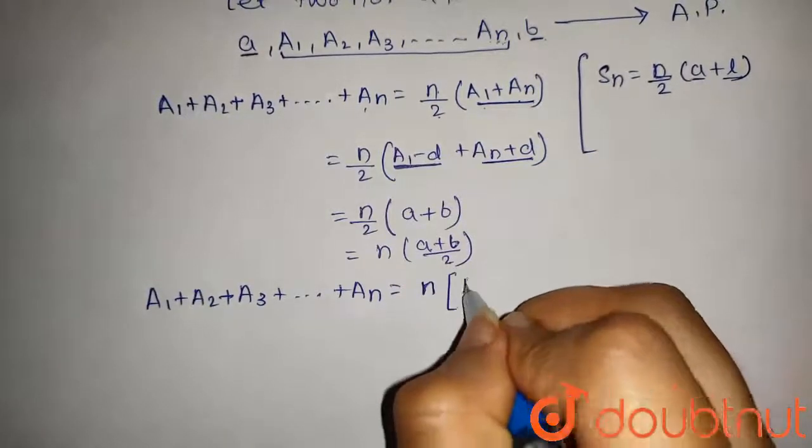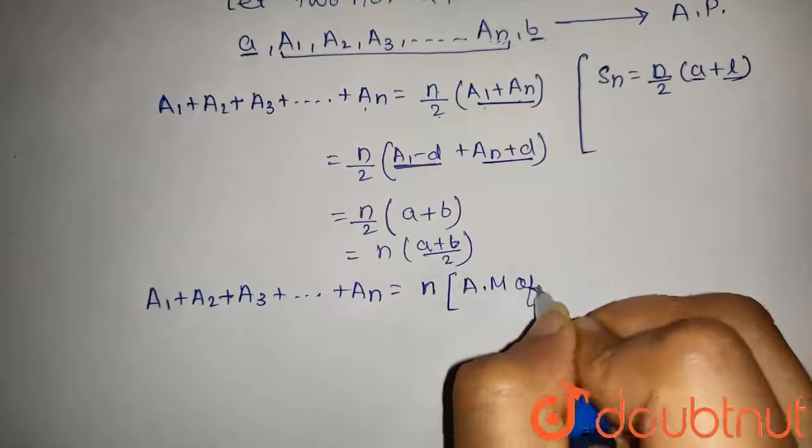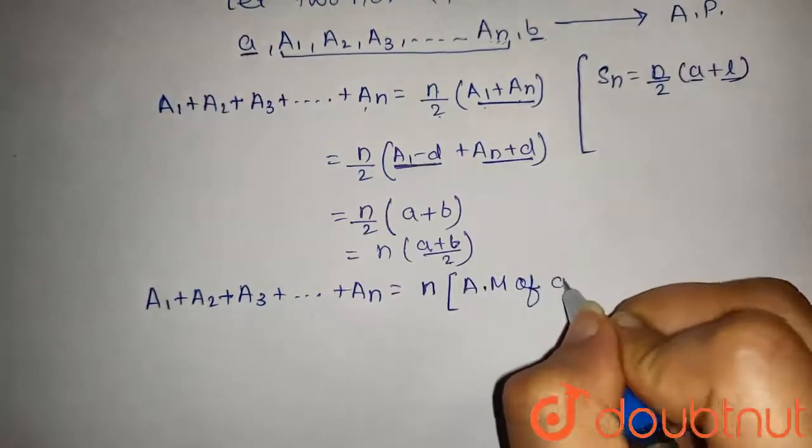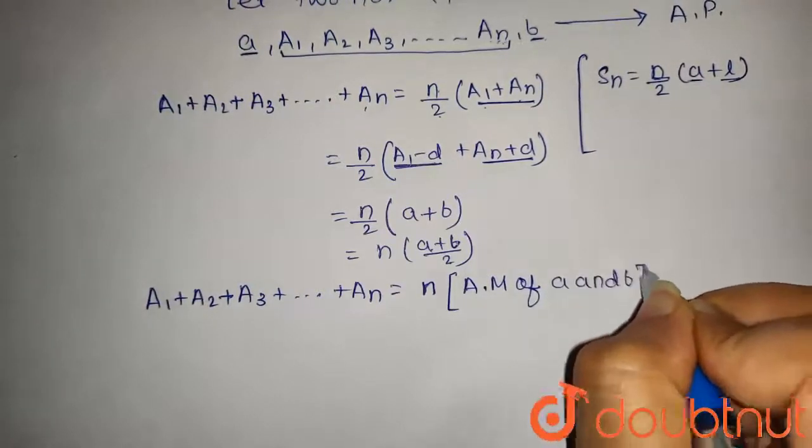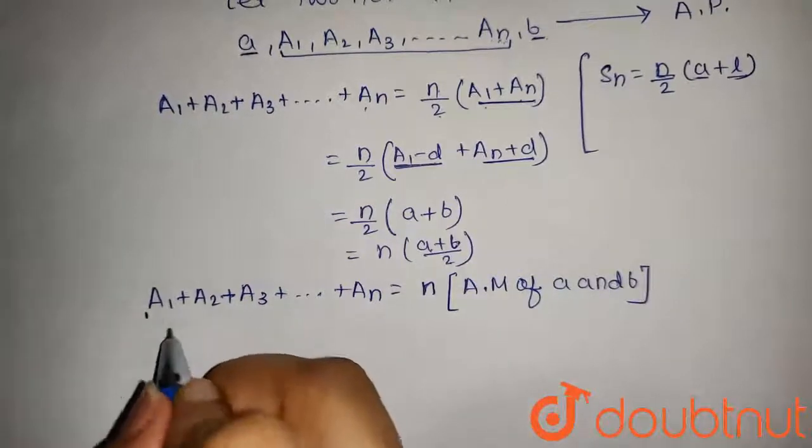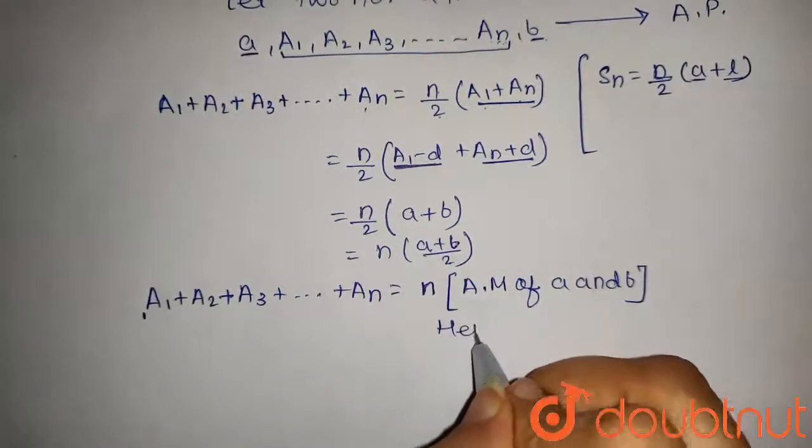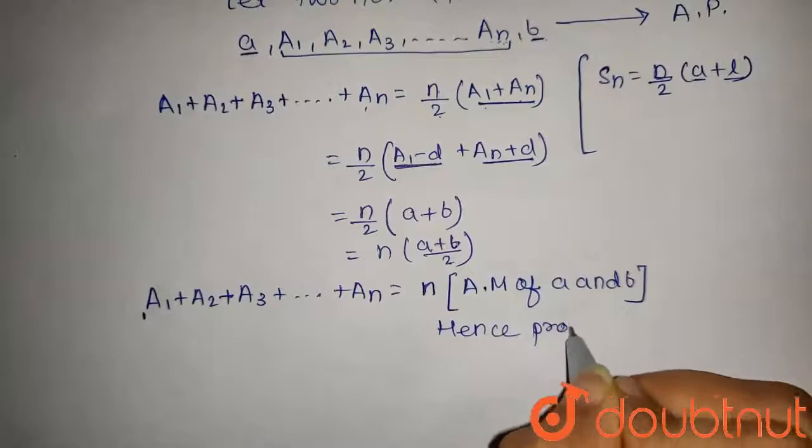It is the AM, that is arithmetic mean of a and b. And this is what we have to prove in this question. So hence proved.